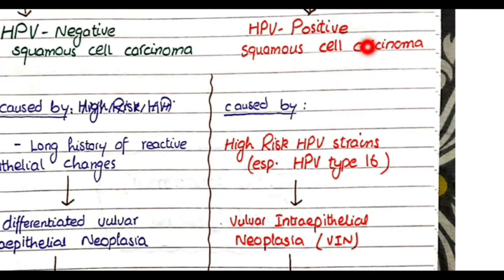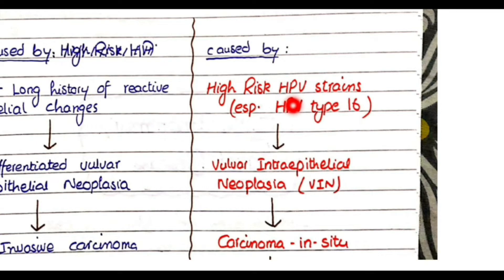HPV-positive squamous cell carcinoma is caused by high-risk HPV strains — specifically HPV 16 and 18. Recall that HPV 6 and 11 are low-risk and result in condyloma accuminata, but HPV 16 and 18 are high-risk and can cause squamous cell carcinomas. When a high-risk HPV strain infects the vulva, it can lead to transformation into vulvar intraepithelial neoplasia (VIN).